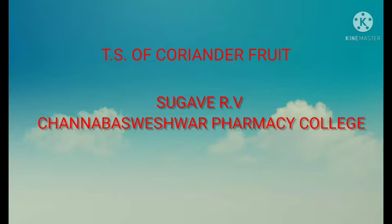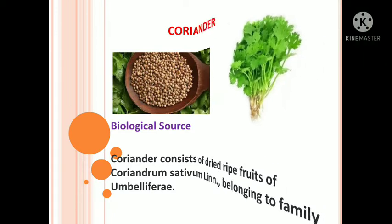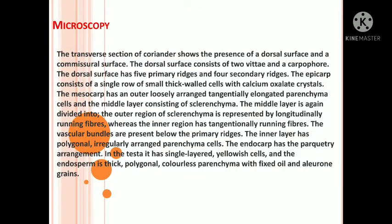So, everybody knows coriander. Coriander is commonly called Dhanie or Dhaniya — that is the synonym of coriander. It is having a biological source. Coriander consists of dried, ripe fruits of the plant Coriandrum sativum, belonging to the family Umbelliferae. It shows microscopical characters when we take a thin transparent section of coriander.